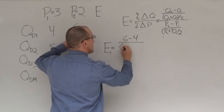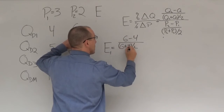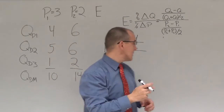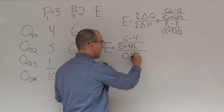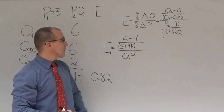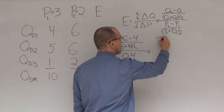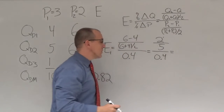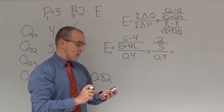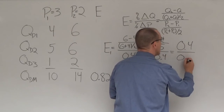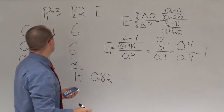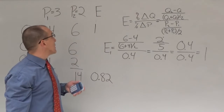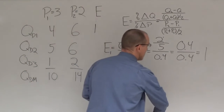For individual number 1: Q2 is 6 minus Q1 which is 4, over (6 plus 4) divided by 2. Since we're looking at the same price range, the denominator is already 0.4. The numerator is 2 over 5, which is 0.4. So 0.4 divided by 0.4 equals 1 — individual number 1 is unitary elastic.